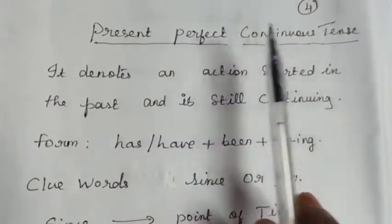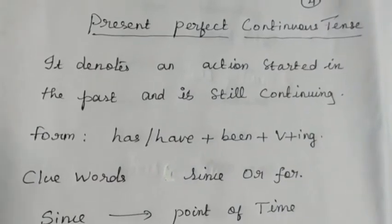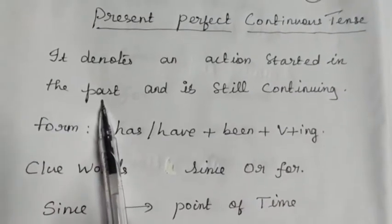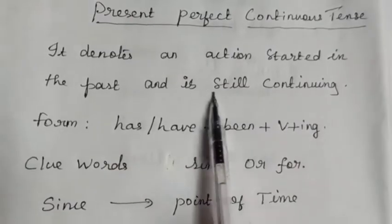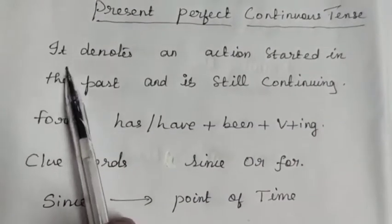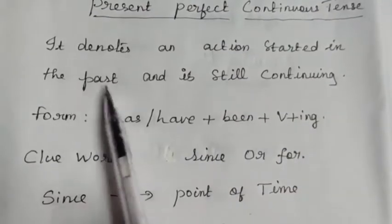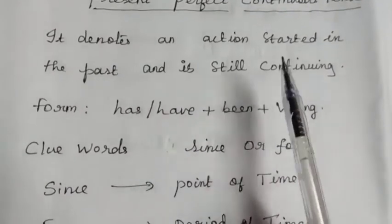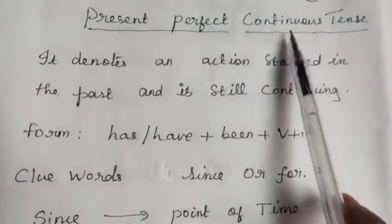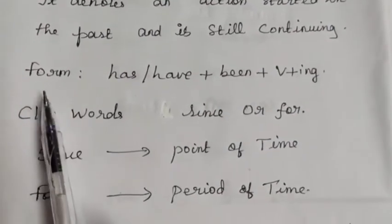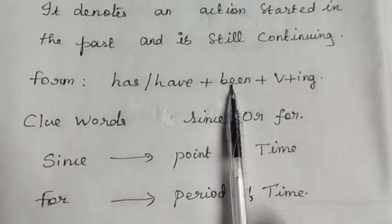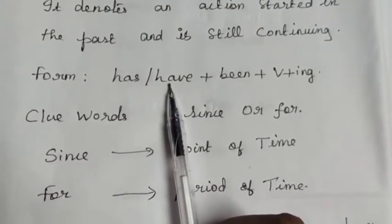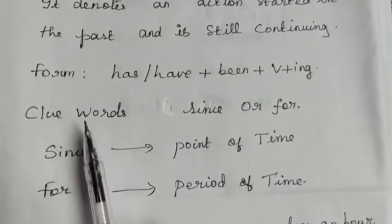Now let's see the next topic: Present Perfect Continuous Tense. It denotes an action started in the past and is still continuing. The form is: has or have plus been plus verb plus -ing. Singular subject uses 'has'; plural subject uses 'have'. The clue words are 'since' and 'for'.